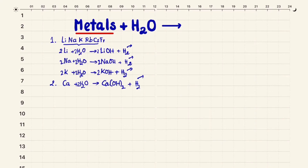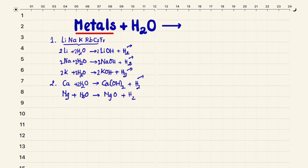When talking about magnesium, it reacts with water — but the water here is in the gas state, meaning hot water or steam. When reacting with hot water, magnesium produces magnesium oxide and hydrogen gas: Mg + H₂O(g) → MgO + H₂.